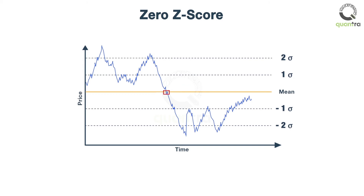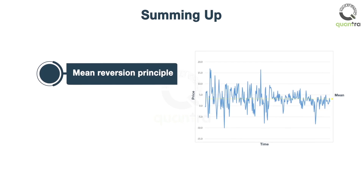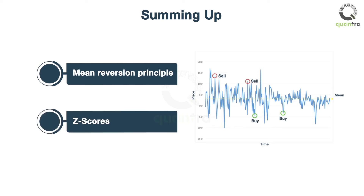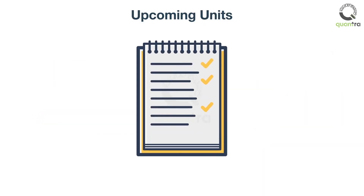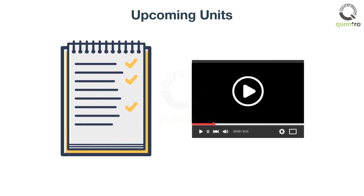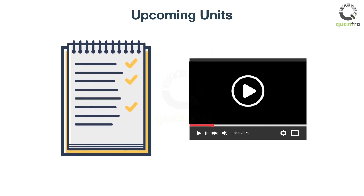To sum it up, we learned about the mean reversion principle, which suggests that prices tend to move around the historical mean over time, and Z-scores can be used to identify the deviation from the mean and generate the appropriate trading signals. That is all for this video. In the upcoming unit, there are quizzes based on these concepts, and then we will learn about co-integration.